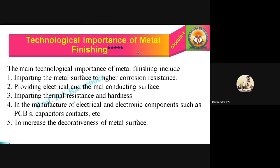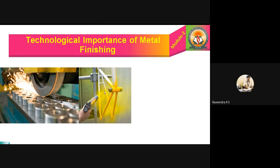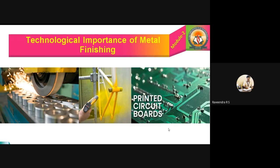We can also increase the decorativeness of a metal surface. This fifth application is most used by jewelry industries. Most jewelry industries use this technology to increase the decorativeness of metal articles — especially silver articles, platinum articles, and gold articles — to design them and give some decorativeness to the metal. For all those applications, the technology of Metal Finishing helps us. We can see in this image how the shining nature and surface properties are increasing, and how the modification of surface properties can be done, such as by painting — we can give a layer of useful paints. This shows the printed circuit boards and many technical applications of Metal Finishing.